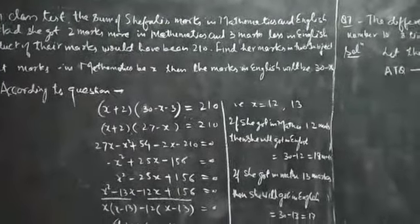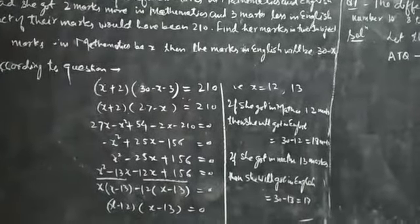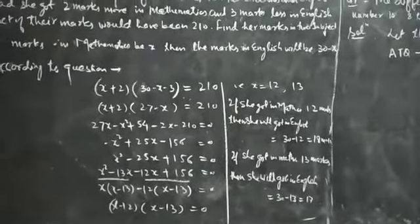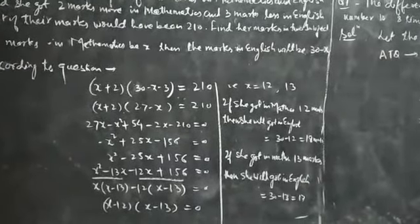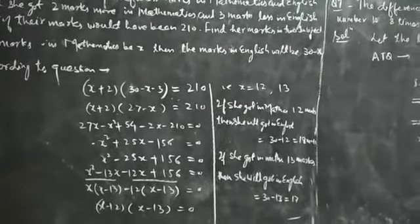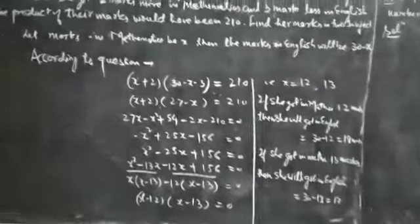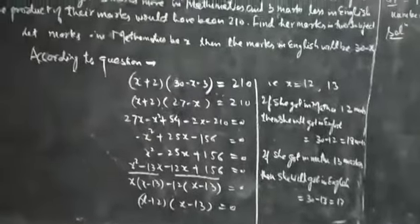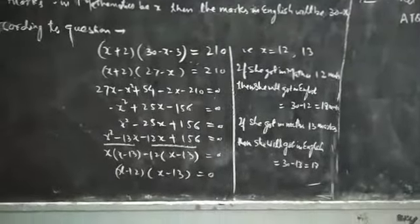According to the question, (x + 2)(30 - x - 3) = 210. The expression becomes (x + 2)(27 - x) = 210. After simplification, the expression becomes a quadratic form: x squared minus 25x plus 156 is equal to 0.